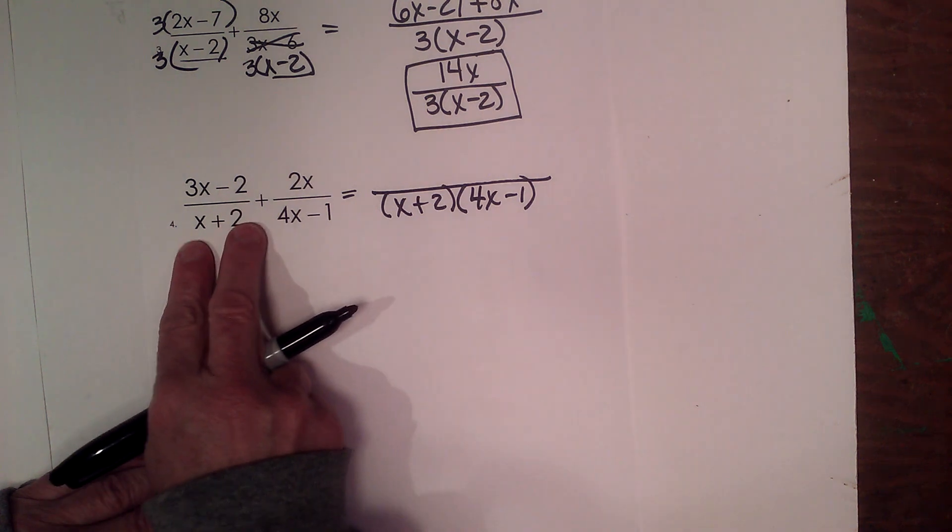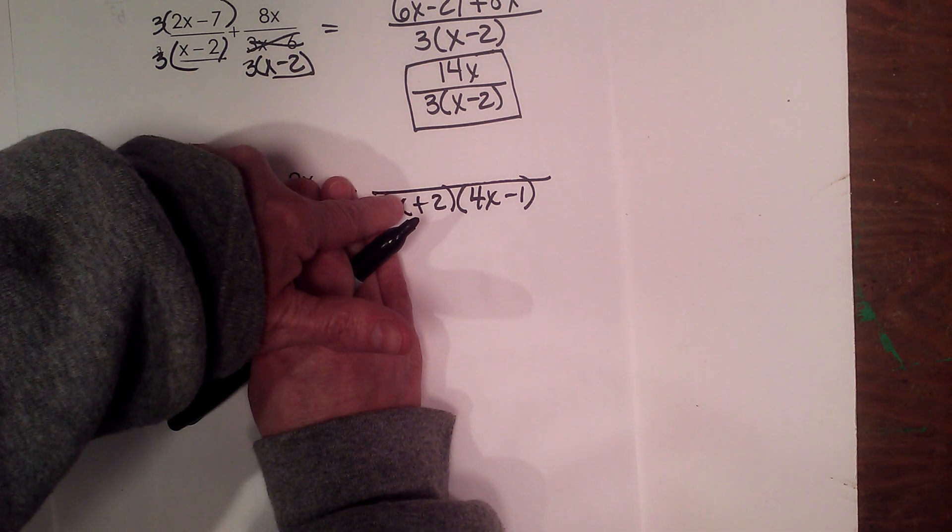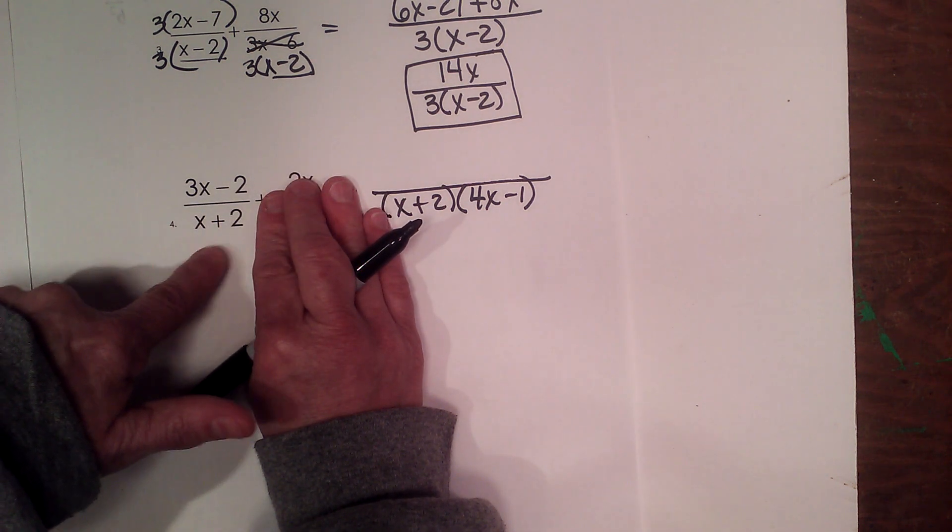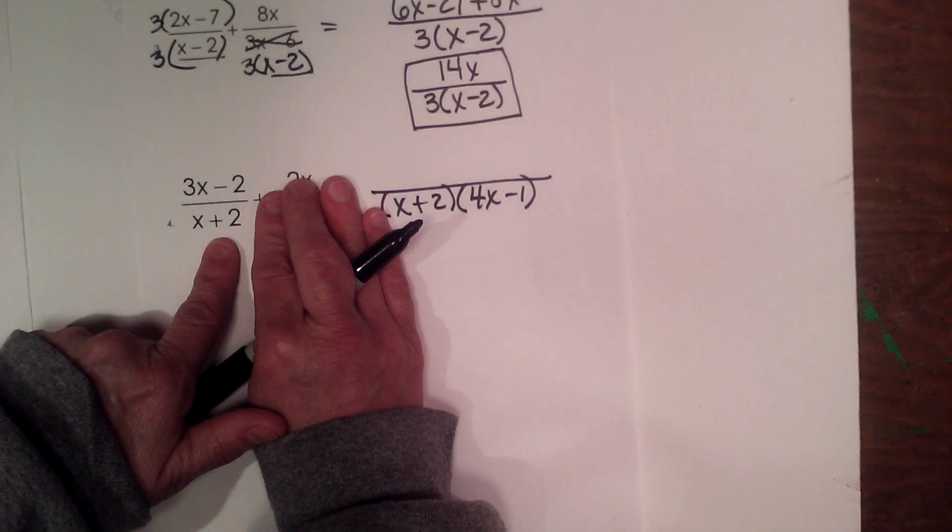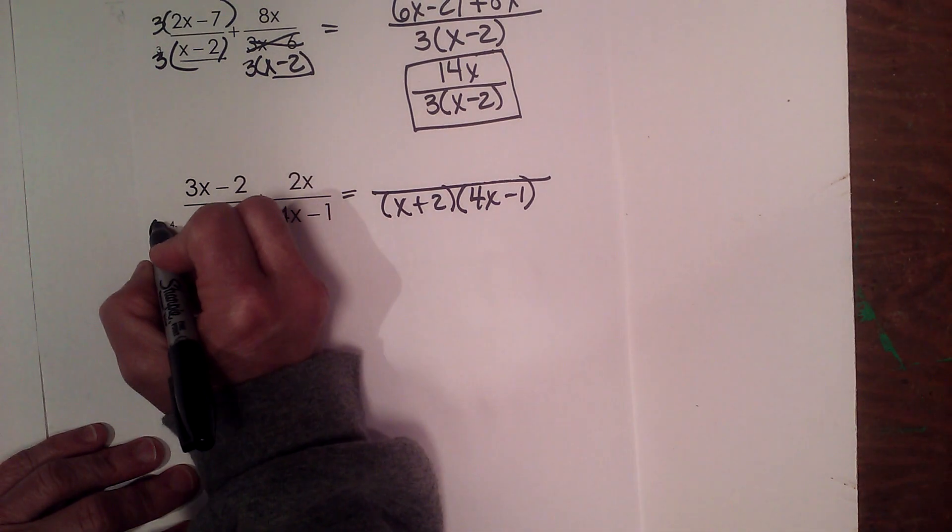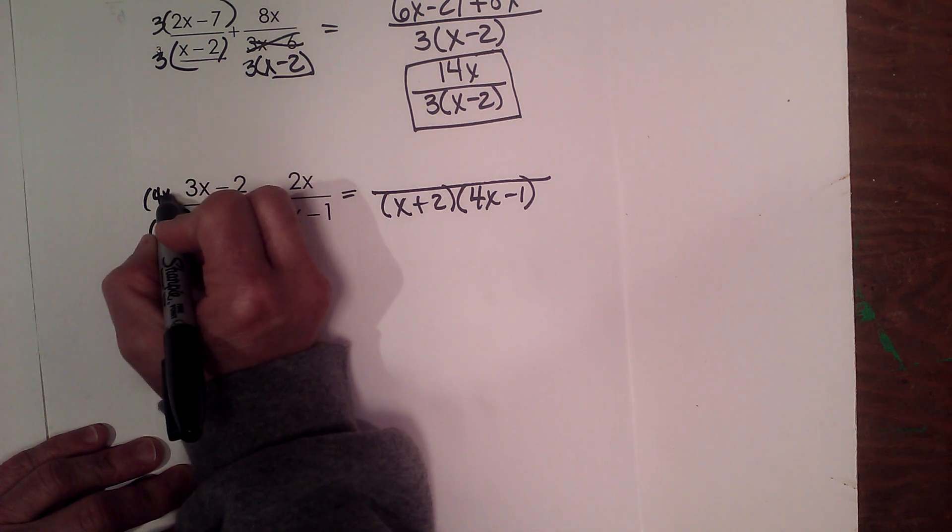Now what I need to do is look at my first term. I'm going to ignore the second one. What do I need to multiply my first term by to get this common denominator? I'm missing this 4x minus 1, so that means I need to multiply this first one by 4x minus 1 over 4x minus 1.